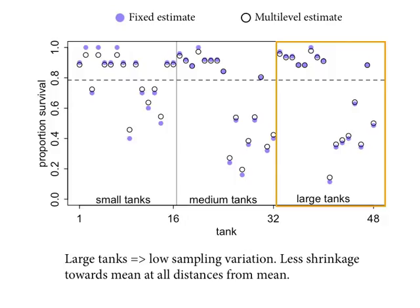The medium-sized tanks are intermediate. Notice also that the further the tank is from the population mean, the more it moves towards the mean — because more extreme estimates are less likely according to what we've learned about the population distribution. They're less plausible according to the posterior and get pulled further in out of the tail of that distribution.